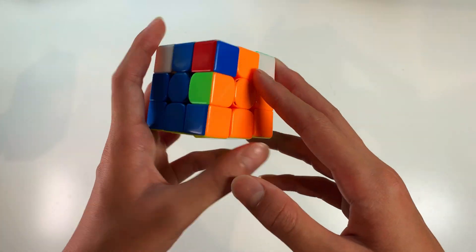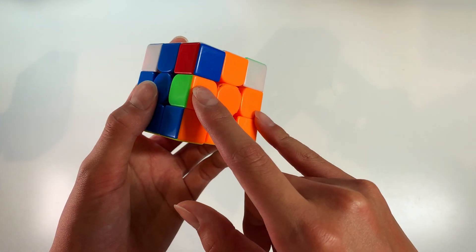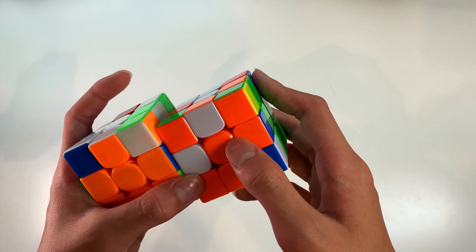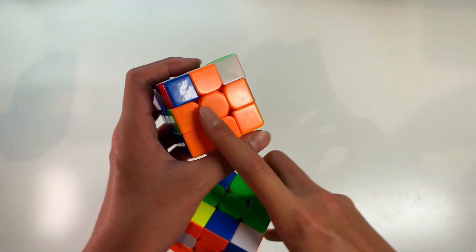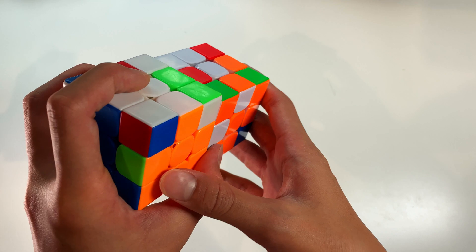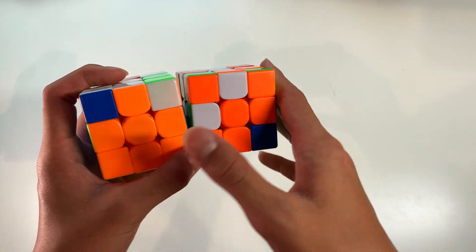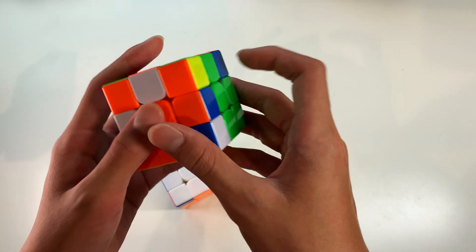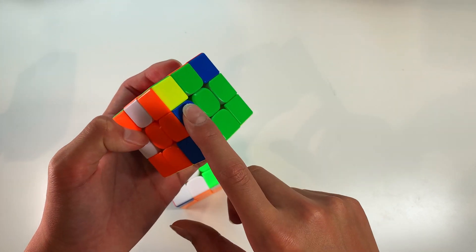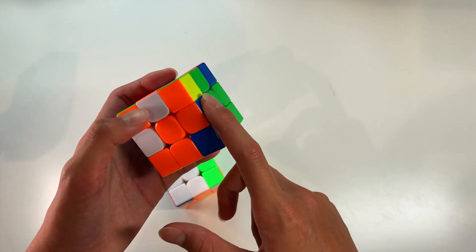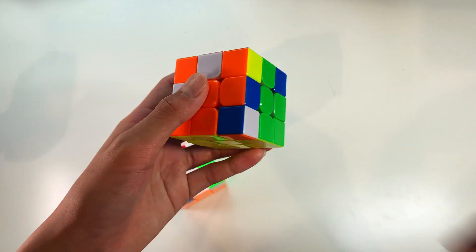So this is a pretty well-known case which is R2U2R2U2R2 which basically swaps these two edges. Now this is basically what I like to call the half algorithm of this exact same case. So basically these two cases are identical except that these two will solve two pairs at once and this will only solve one pair which is this corner and this edge right here. So you need to move this edge over to this slot.